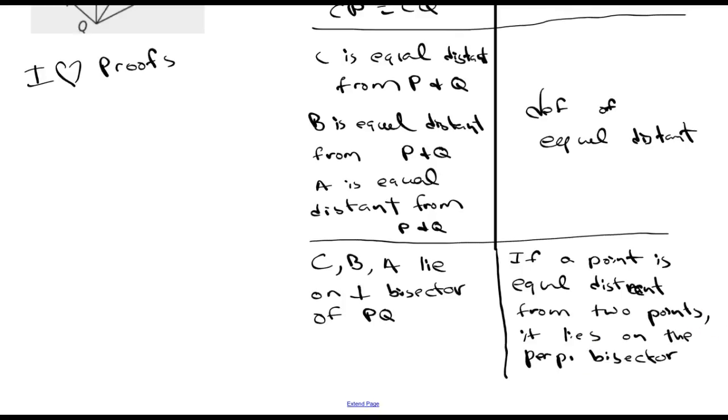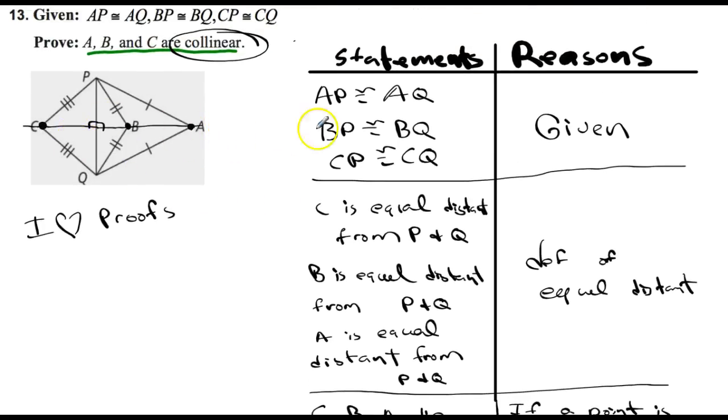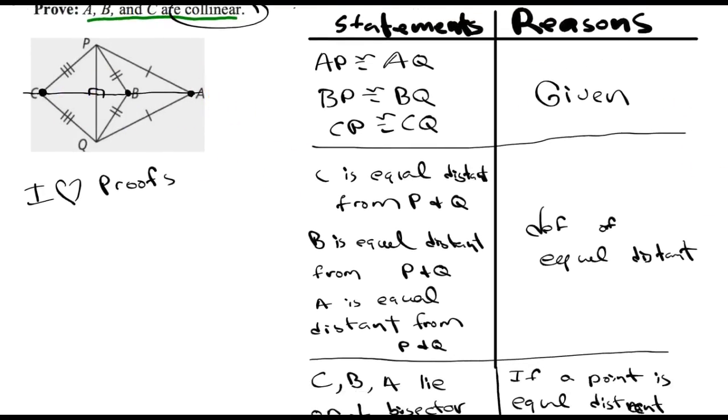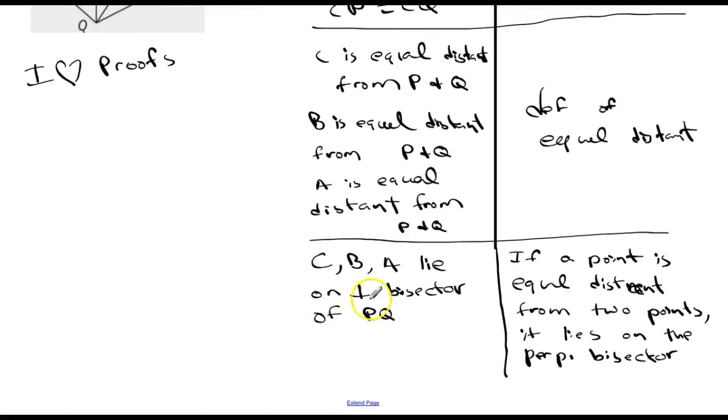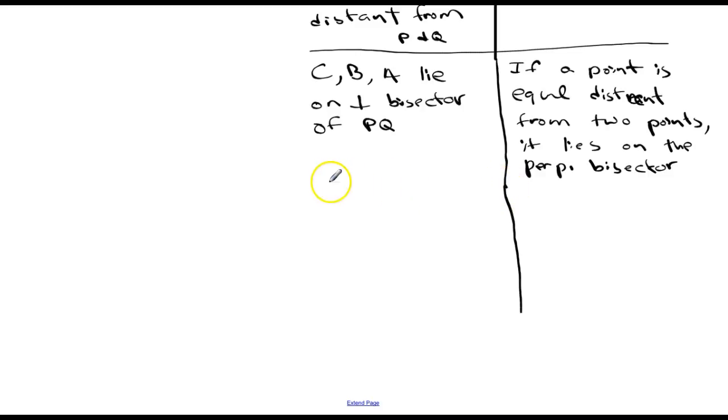And we're almost done here. So now I've established that A, B, and C in the proof all along the perpendicular bisector. And so since they're all the same, the perpendicular bisector of P and Q, there's only one perpendicular bisector of P and Q, we can say that C, B, and A are collinear. And my reason be, they're all on the same bisector.